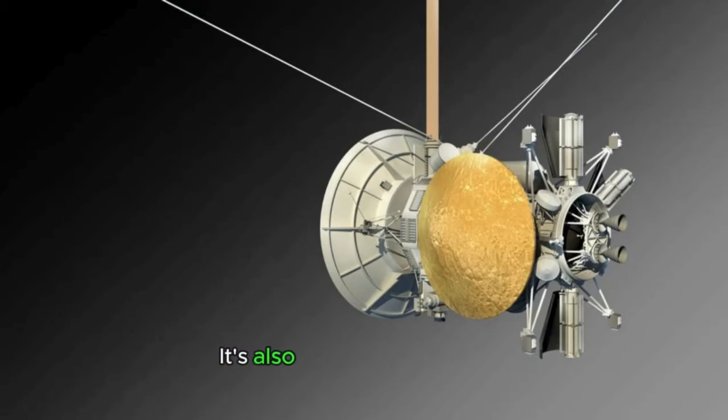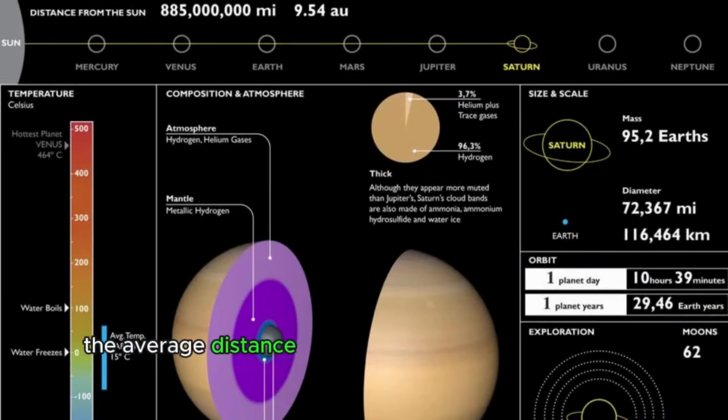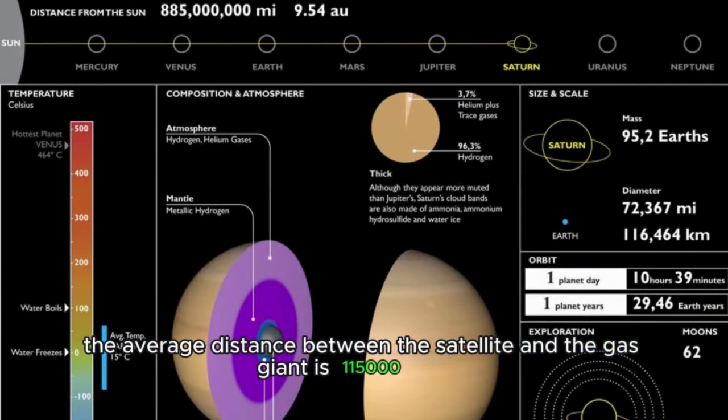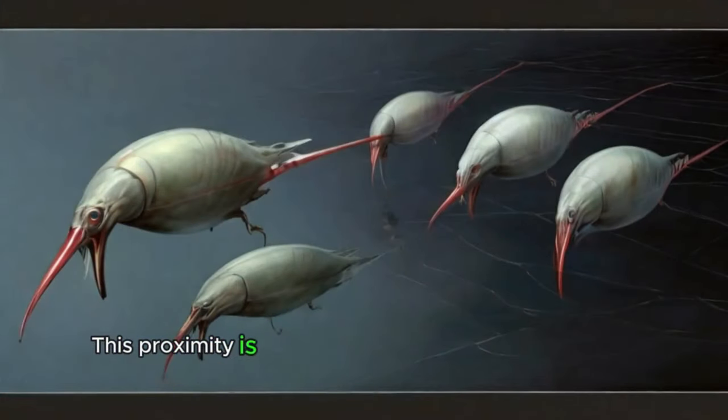It's also very close to Saturn. The average distance between the satellite and the gas giant is 115,000 miles. This proximity is probably caused by the migration of Mimas.